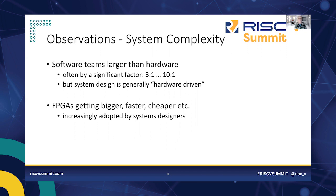FPGAs are getting bigger, faster, and cheaper and are increasingly being adopted by system designers. At the same time, ASICs are becoming easier, faster, and cheaper to create. So a lot of things are changing, mainly in the direction of complexity.